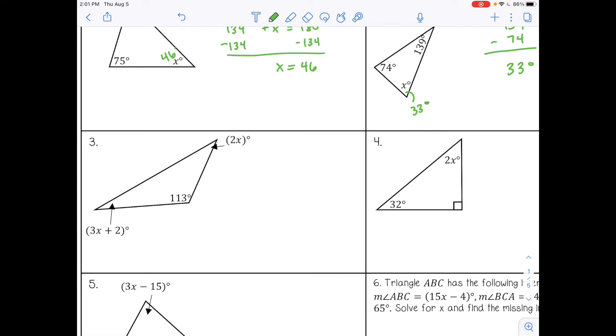Now the next example has expressions. So I'm going to have to write out an equation. Again, it doesn't matter which one you start with. And when you write the equation, you can get rid of the parentheses and the degree marks and just write the expressions. So 3X plus 2 plus 2X plus 113 equals 180. I'm going to combine my like terms. So 3X and 2X, that's 5X. 2 plus 113, that's 115. And then bring down the rest. Next, I'm going to subtract 115 from both sides and then divide by 5. So X equals 13.